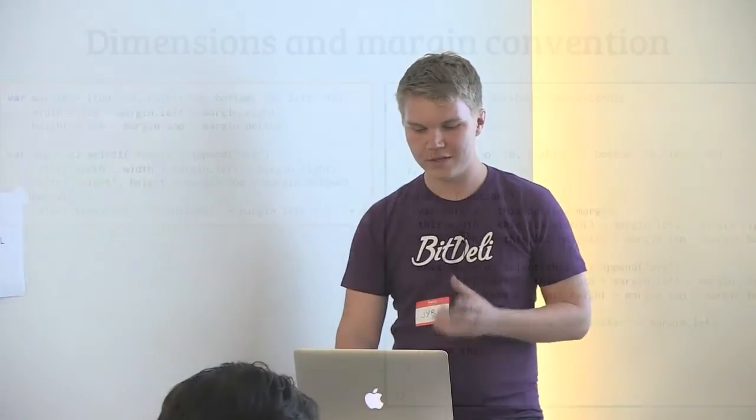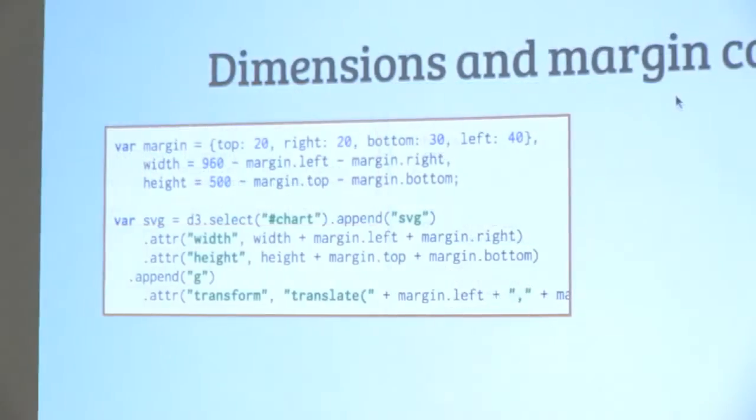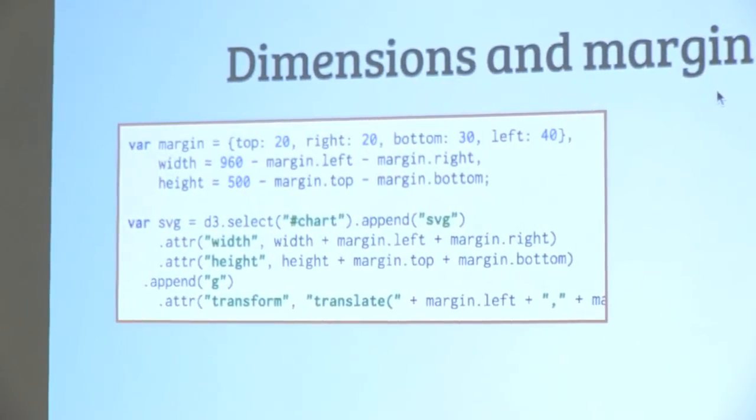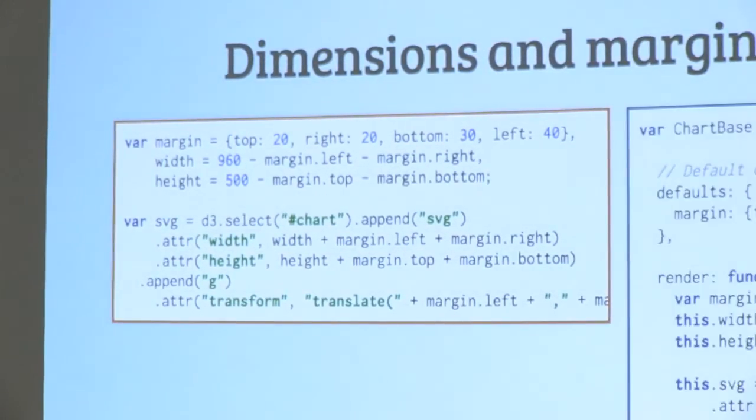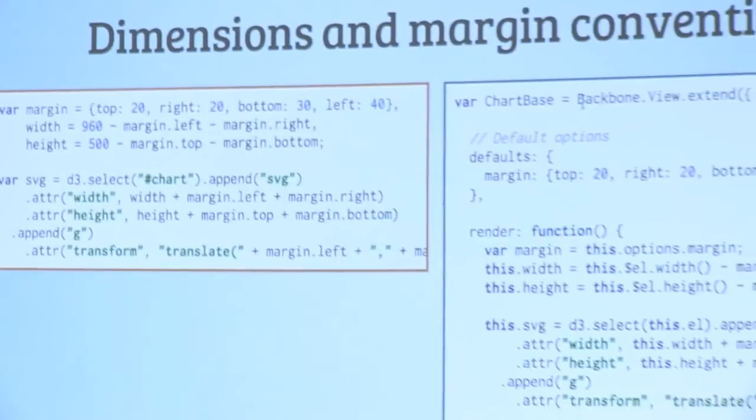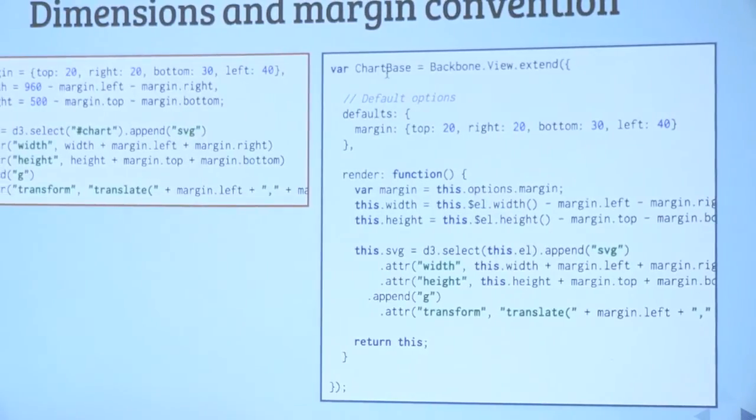So here's a piece of D3 code. Here's a really simple, this is the margin convention. We have a, can you see it back there? Somewhat? Okay. You can check out the details later. So it's defining the margins and the dimensions on the chart. And what it looks like in Backbone could be something like this. We have a view that's, so we're extending a Backbone view. So this is the base view that's handling a DOM element. And we're building a base chart class. So it's handling all kinds of charts.